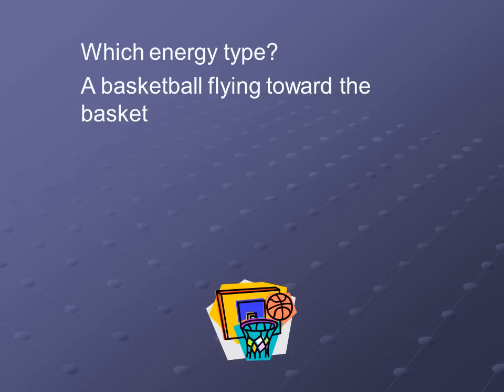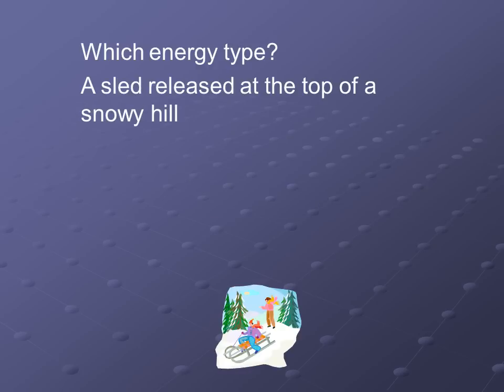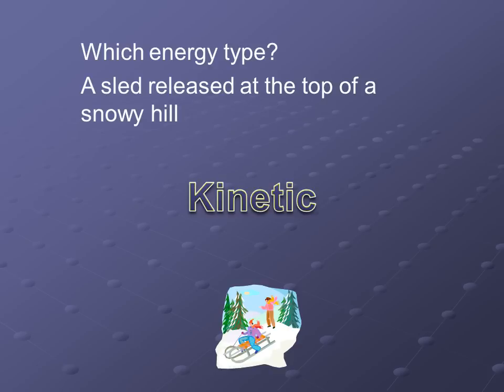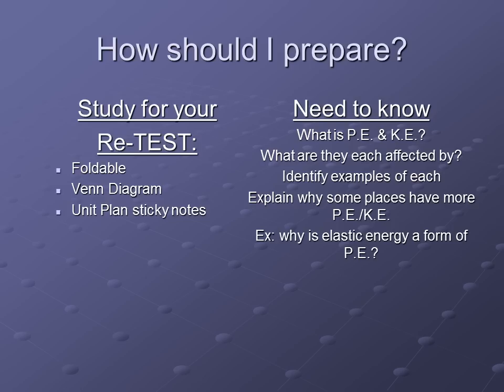For this next one: a basketball flying towards the basket. Because the ball is still flying, it's still in motion, so we say kinetic energy. Our next one: a sled released at the top of a snowy hill. Don't let the top of the hill confuse you — it says the sled was released, so if the sled has been released, it is moving. And if the sled is moving, we can say it's kinetic energy.